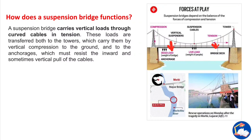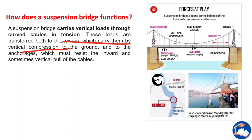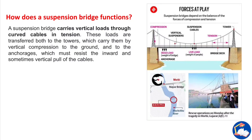The load is carried by the anchorages and curved cables. These loads are transferred both to the towers, which carry them by vertical compression to the ground, and to the anchorages, which must resist the inward and sometimes vertical pull of the cables.